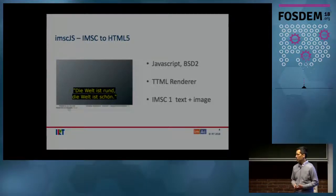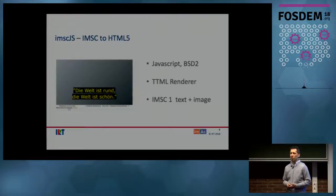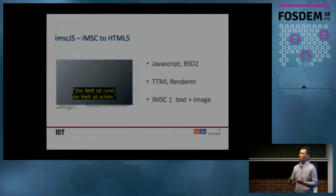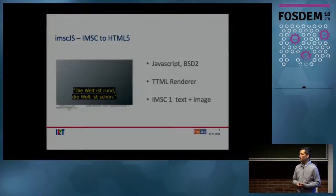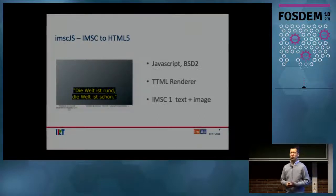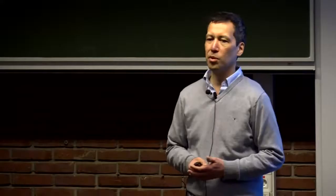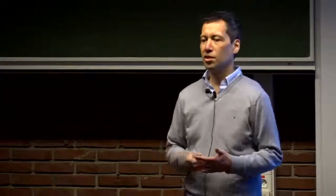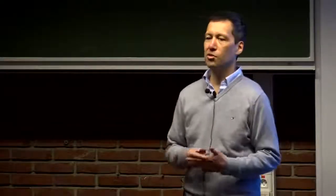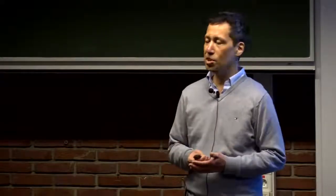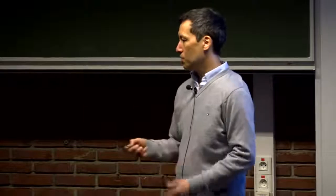IMSC.js is written in JavaScript. It has a pretty free open source license — BSD2. Because it covers pretty much what you would do with TTML, it's not only an IMSC renderer; it's a good TTML renderer. And because it has not only a text profile but also a profile for images, that may be useful if you do not have the font available on the device, especially if you want to deliver some Asian languages.